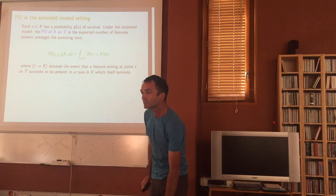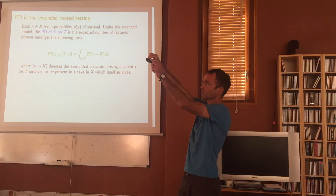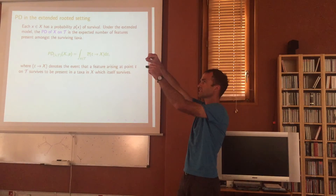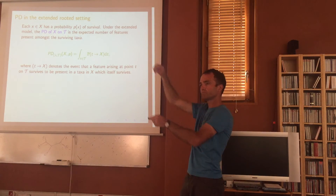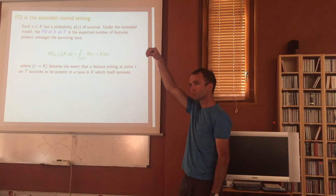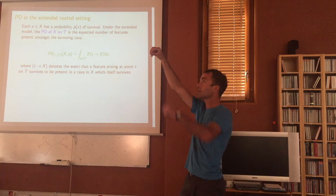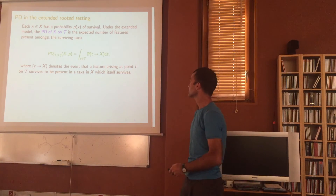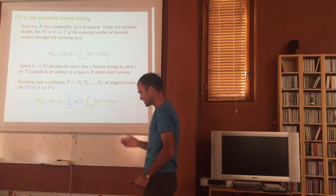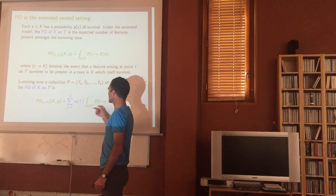This only makes sense in the rooted setting because we have a notion of time going from the root down to the present day — the root is in the past and the leaves are the present. The part about having a collection of trees is almost secondary, but you can weight the trees depending on how relevant each gene tree is, and compute the measure across each individual tree.